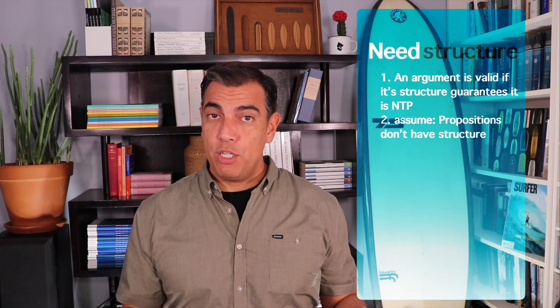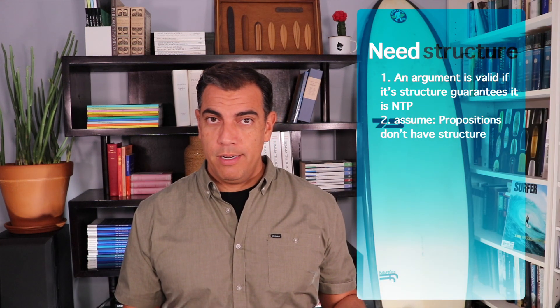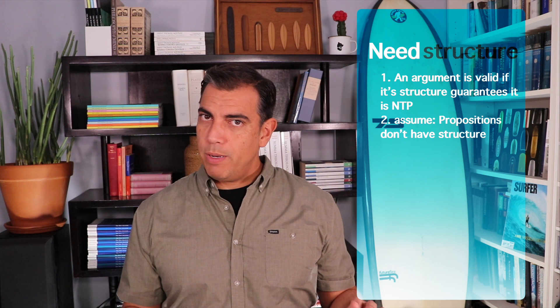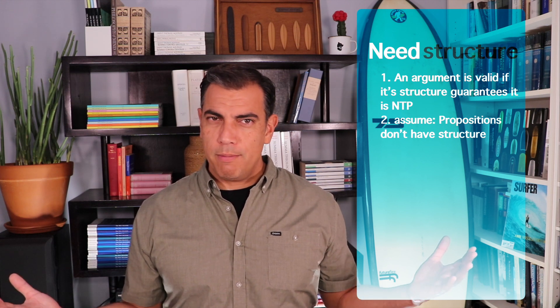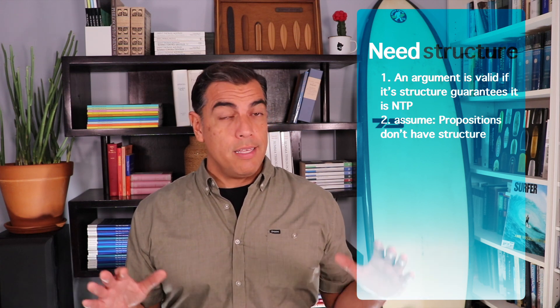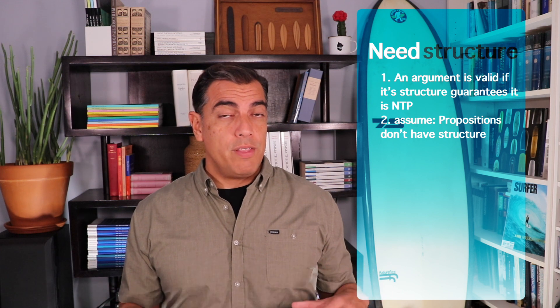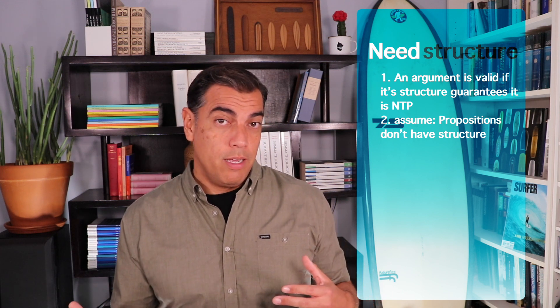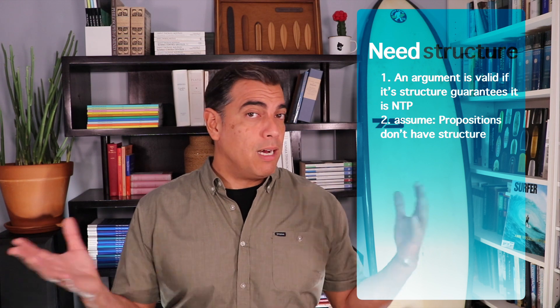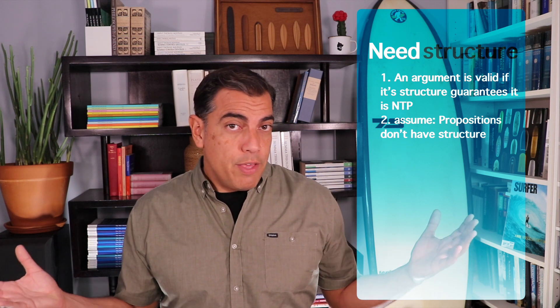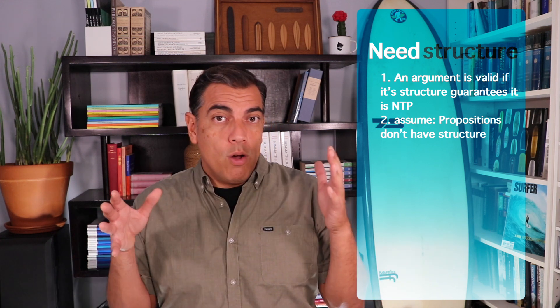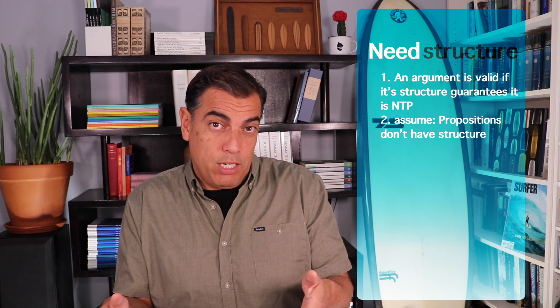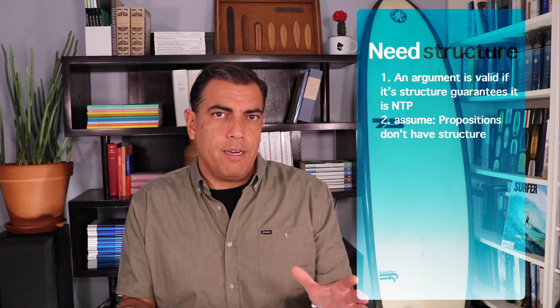So that's step one — making sure that we know exactly what it is that we're talking about. We haven't really done anything crazy just yet. Step two: we're going to pretend that propositions don't have a structure. For this argument, we'll pretend like they don't, and we'll show that it has some absurd conclusion. Therefore, we must believe that they do have structure. So it's kind of a strategy that we're using here.